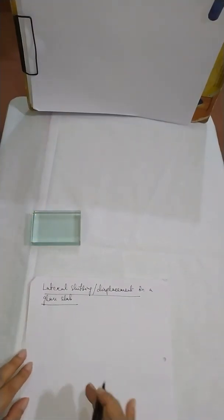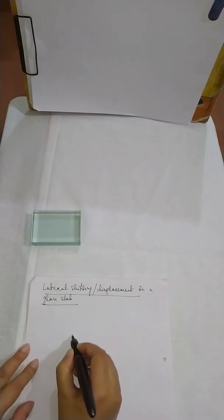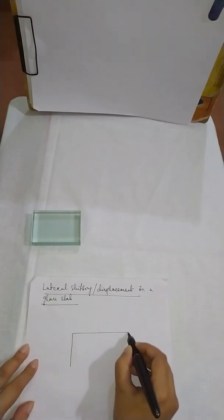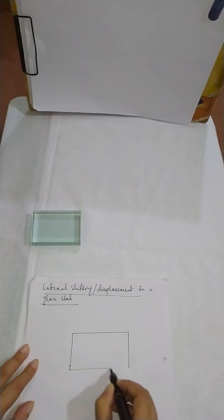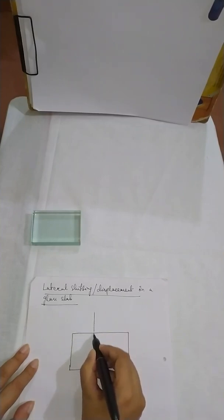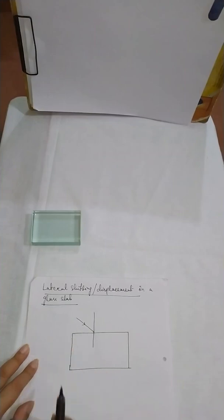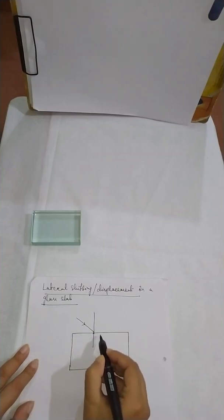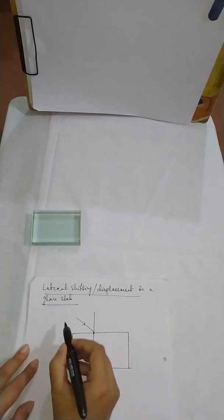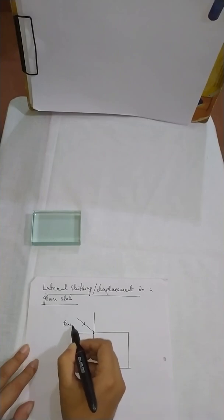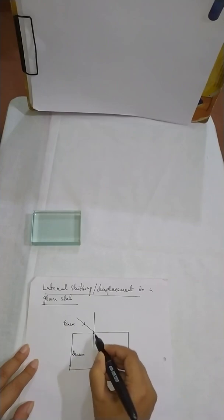So how will we get a lateral shifting condition in a glass slab? As you know, if this is a glass slab, this is my normal, here is my incident ray. Then at this interface there will be refraction. Since this is a rare medium and this one is a denser medium, the ray of light will bend towards normal.